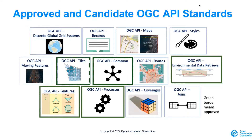As already mentioned, there are many different OGC APIs. There are even OGC APIs for special types of data that were not covered by the previous generation of web services. Each one of these APIs provides access to one type of geospatial resource.